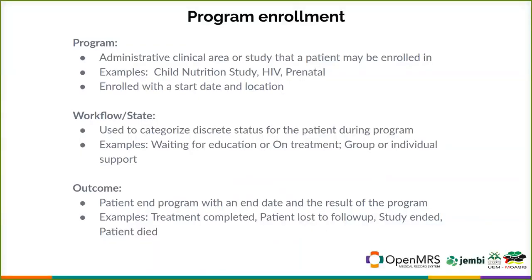Program enrollment relates patients to a clinical or research study program. They would have a start date, the name of the program — maybe it's a nutritional study — and a location of where they enrolled. While in the program, they might have a workflow with a discrete state assigned to them, such as waiting for education or currently on treatment. Then there's an outcome with an end date — treatment completed, patient lost to follow-up, study ended, or patient died.